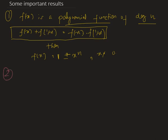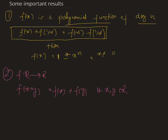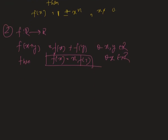Now the second result. f is a function which is a mapping from R to R satisfying f(x + y) = f(x) + f(y) for all x, y belonging to R. Then we can write that f(x) = x · f(1) for all x belonging to R.